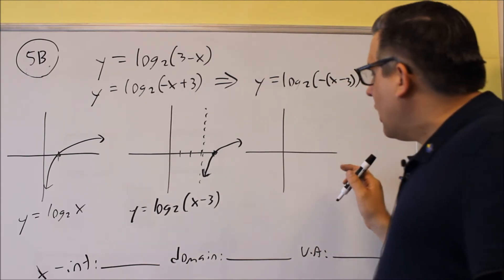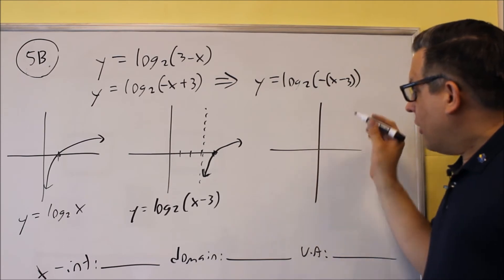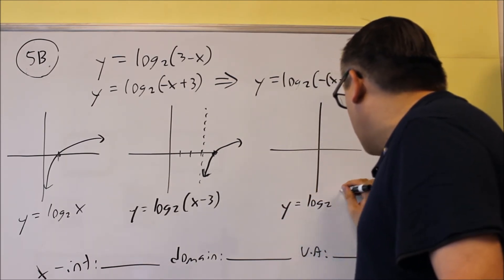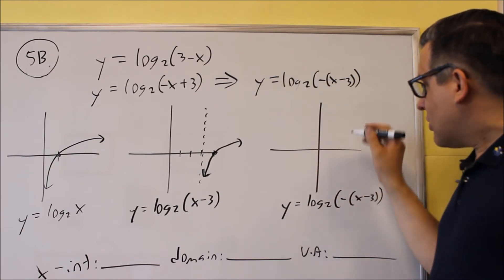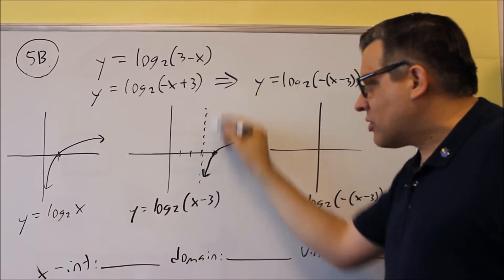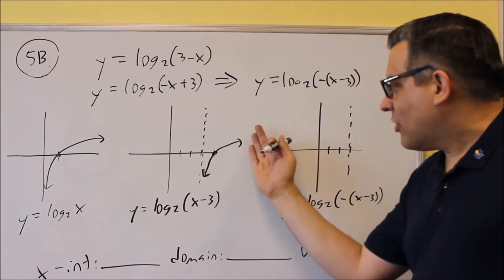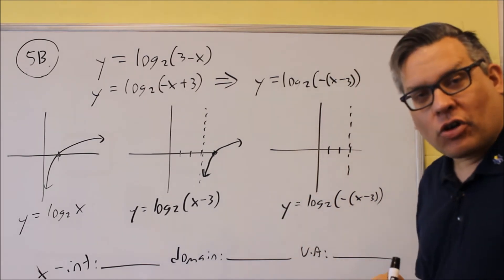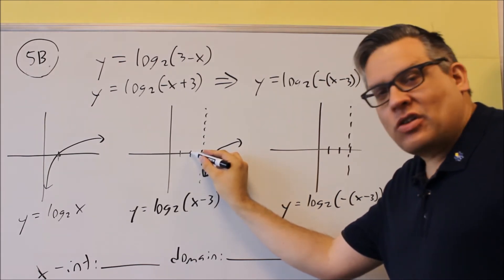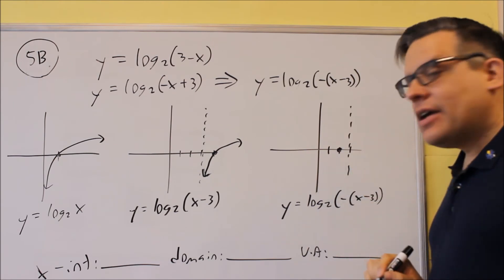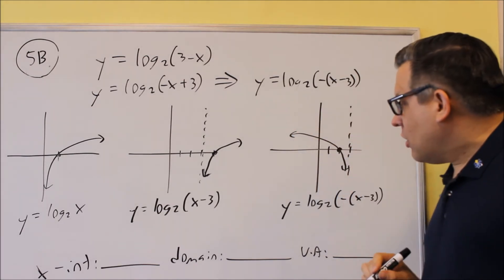Now we're going to apply the negative on the inside, and this is going to be our final graph. What that negative does is it's going to pivot the graph about the vertical asymptote. So we're still going to draw in the vertical asymptote line at 3, but the graph itself is going to be reflected over the vertical asymptote. So this point that was here — if we flip it over, it's now going to cross 1 to the left instead of 1 to the right, so now it's going to cross here at 2. And the graph is going to go in the opposite direction, looking something like this. That would be what the final graph looks like.